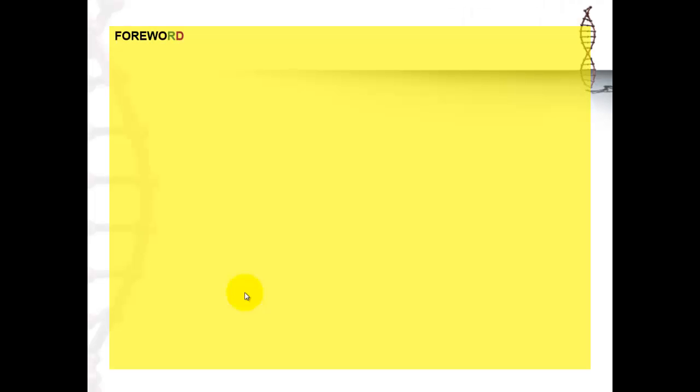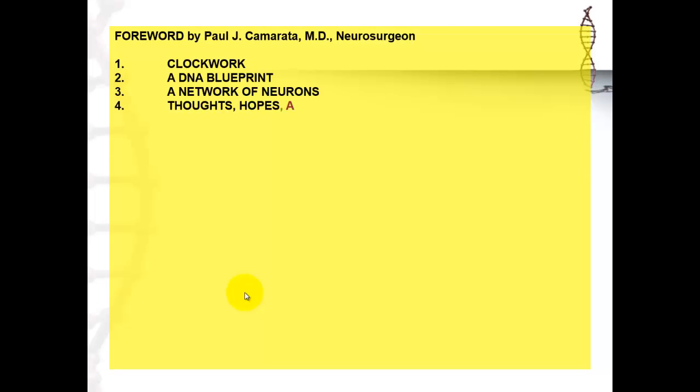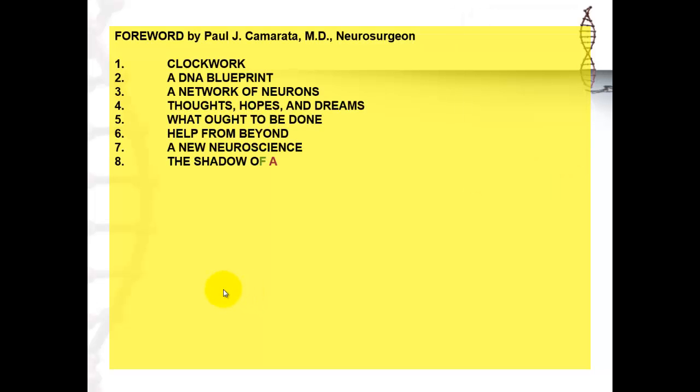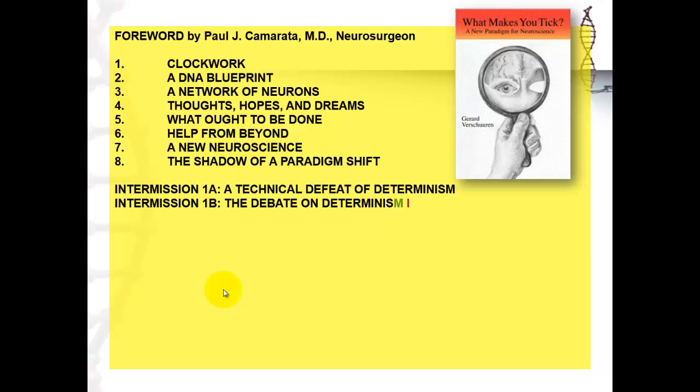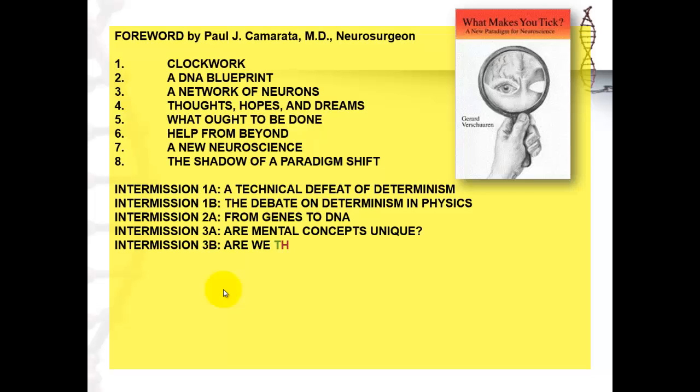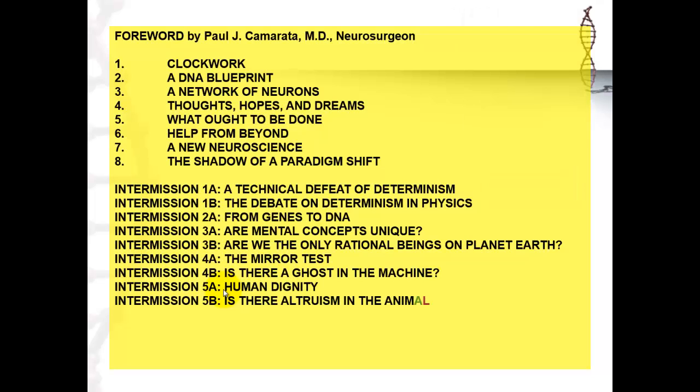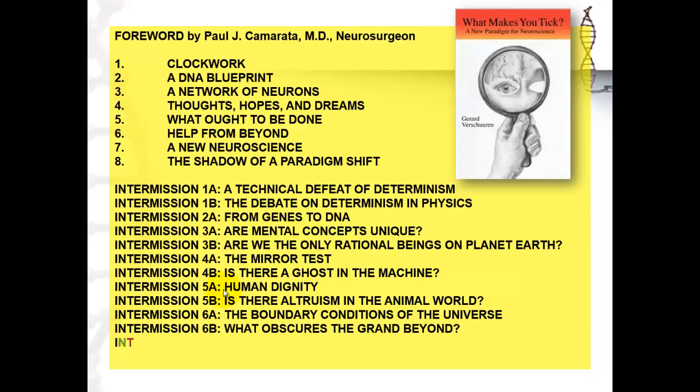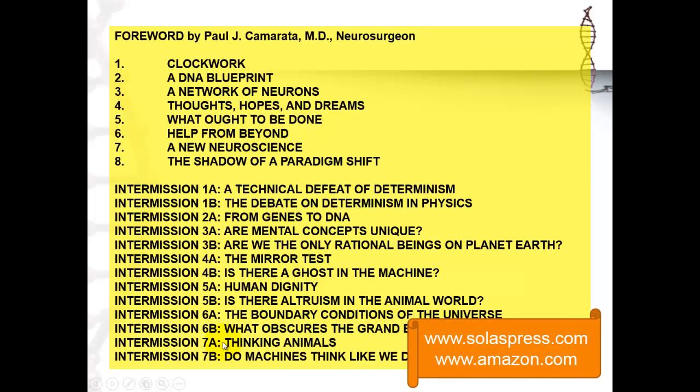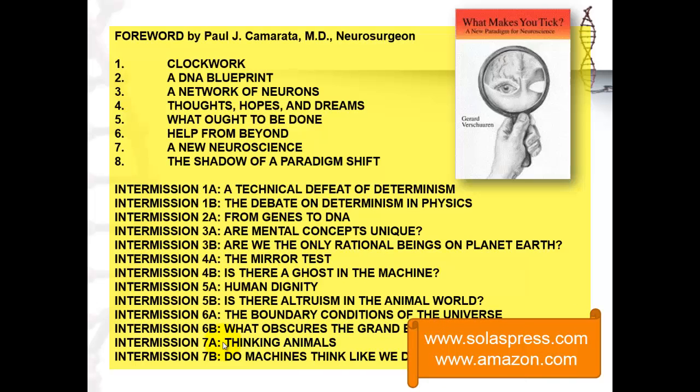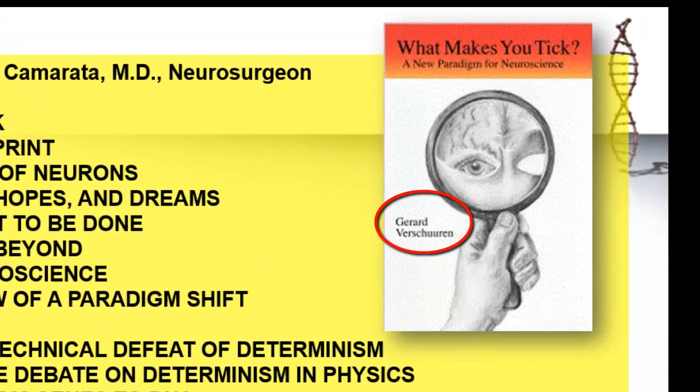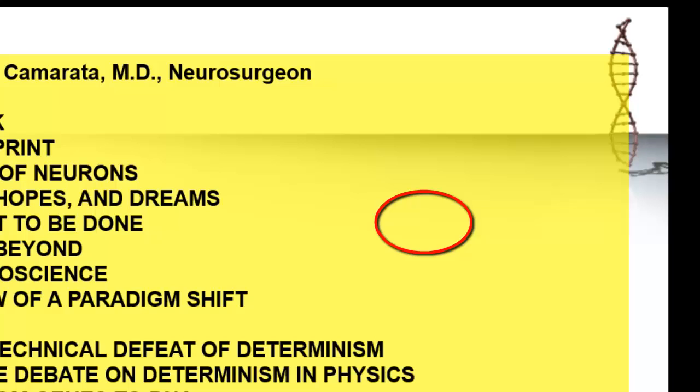There is much more, of course, to this issue. And I discussed all of that in my book, What Makes You Tick. It has the following table of contents. It has also, after each chapter, two intermissions. They discuss a specific aspect if you want to go into that deeper. So it is a rich source of all kinds of views on science and the limitations of science. You can find that information on www.solaspress.com or www.amazon.com. If you type my name in Amazon, Gerard Verschuuren, you will find this book and many others.